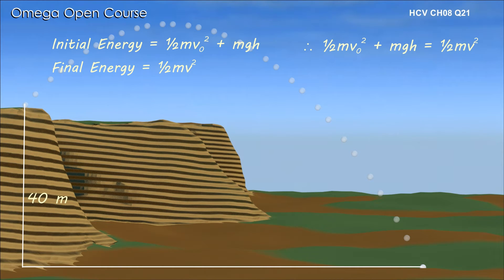As per conservation of energy, the initial energy of the projectile must be same as its final energy, or half mv0 square plus mgh must be equal to half mv square.